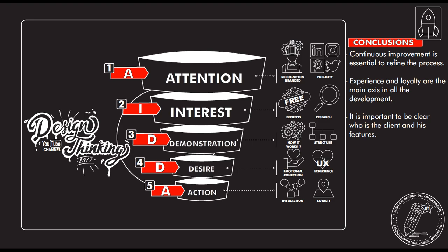As a conclusion, continuous improvement is essential to refine your process. Experience and loyalty are the main pillars of all the development — that is what you're looking for. It's important to be clear about who your client is and all their features, including the characteristics of your user and your buyer, and what the triggers are and what they are looking for.